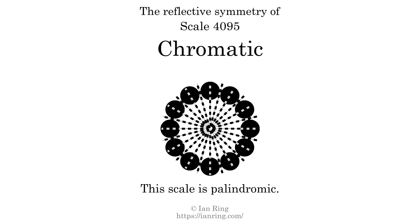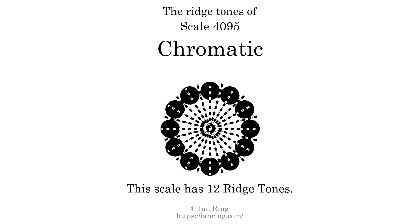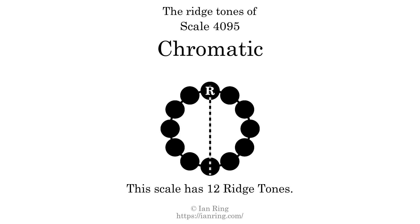This scale has reflective symmetry across 12 axes. This scale has the same pattern of intervals both ascending and descending, so we call it palindromic. This scale has 12 ridgetones, at positions indicated on screen.